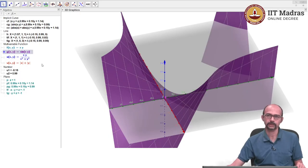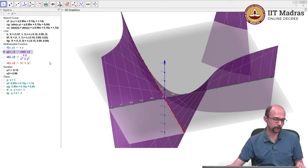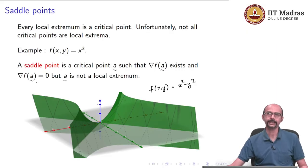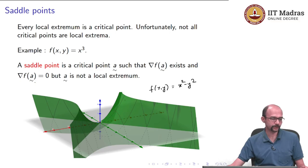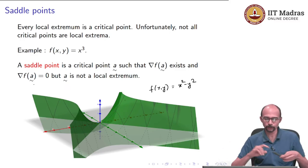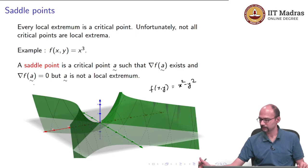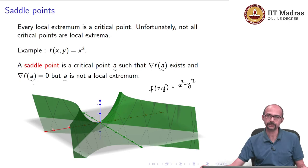Now that we have identified critical points as local minima, local maxima, or saddle points, we can ask how to identify which is which. Like the second derivative test for functions of one variable, there will be something similar for functions of many variables, and we will develop that theory in the next video.